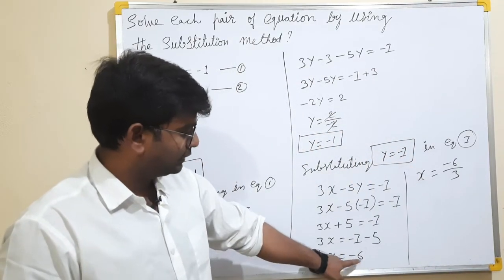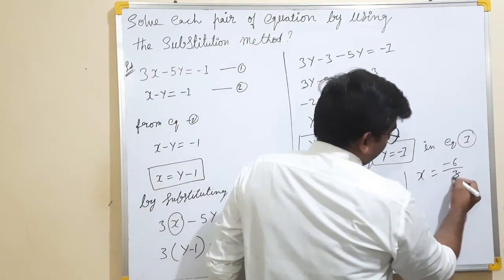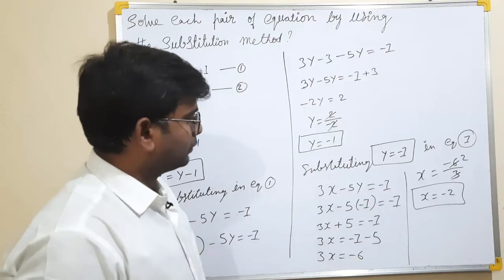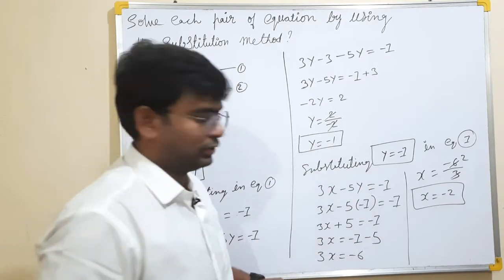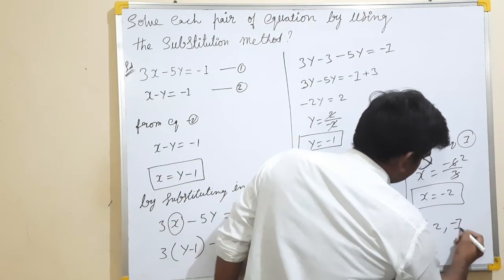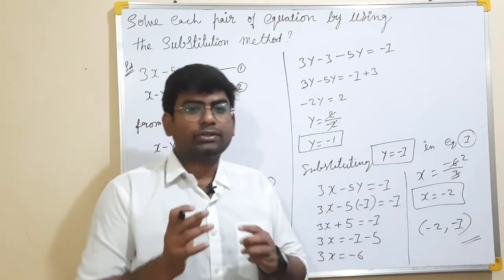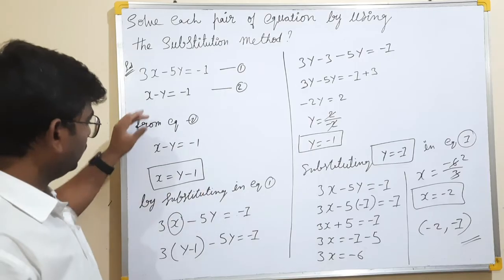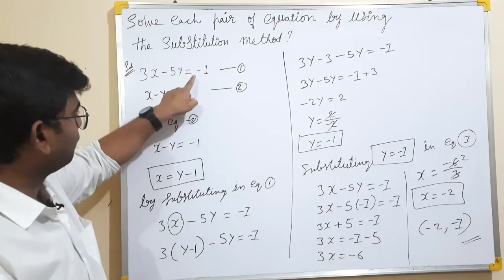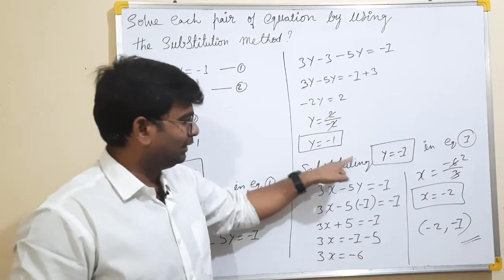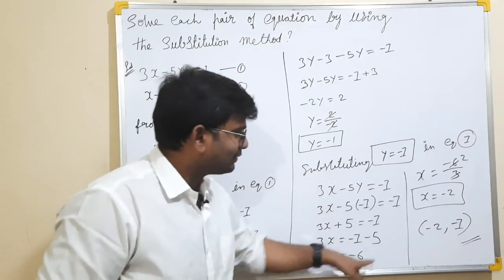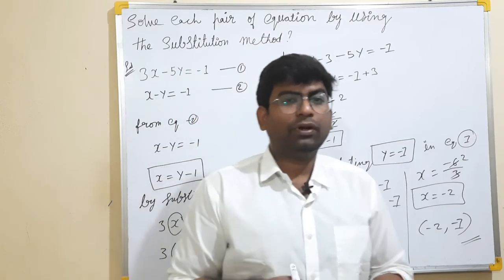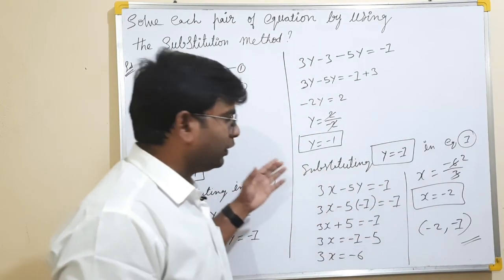So x equals to minus 6 divided by 3, which gives x equals to minus 2. This is the substitution method. You find a simple equation, express x in terms of y, substitute into the first equation, and find the y value. Then substitute back to find x. So x equals minus 2 and y equals minus 1. In the next video, we will cover the elimination method. Please like and share. Bye.